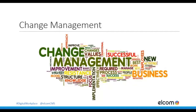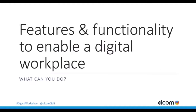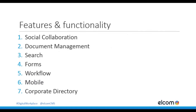So what can you do to help enable the digital workplace? Let's have a look at some of the features and functionality that you can use. We're going to have a quick look at these seven key features and functionality: social collaboration, document management, search, forms, workflow, mobile, and corporate directory.